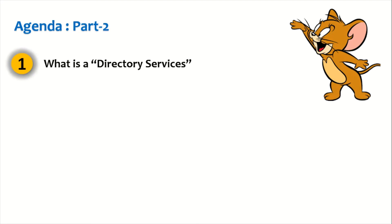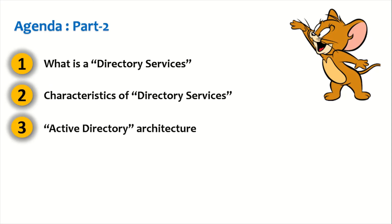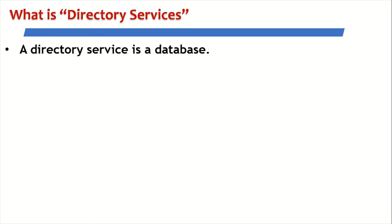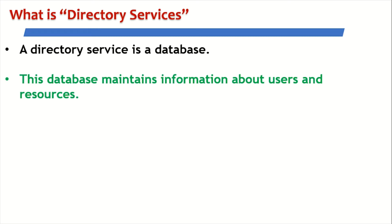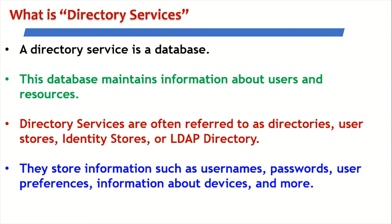In this session, part two, we take a look at what exactly a directory service is, the characteristics of a typical directory service, and the architecture of Microsoft's Active Directory as a directory service. So what exactly is a directory service? A directory service is a database — a database that maintains information about users and resources on our network. Directory services are often referred to as directories, user stores, identity stores, or even LDAP directories.